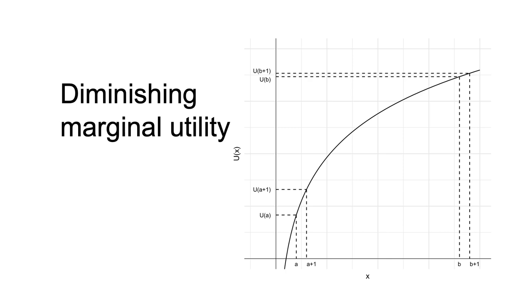One additional unit of good x when the agent has A units of the good leads to a much larger increase in utility than one additional unit when the agent has B units of the good.